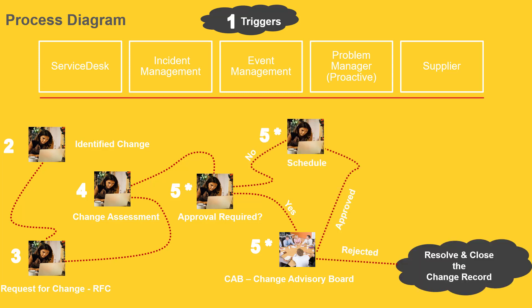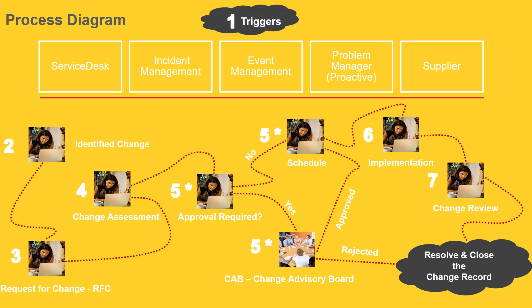A change, regardless of its type, will cause an impact in the system; therefore, the change manager has to take into account the time frame in which the implementation of the change will cause the least impact. After scheduling, the involved team has to actually deliver by implementing the change in the system. Right after that, a review or a series of tests will follow to determine if the implementation was successful, and lastly, the final state of the change, which is closed.